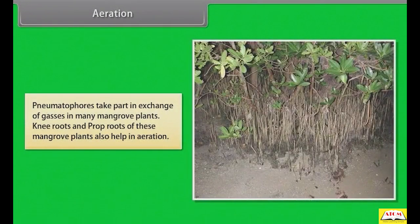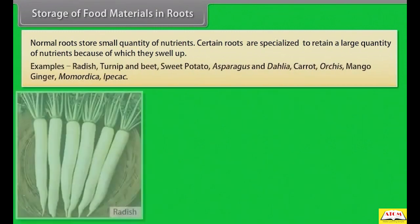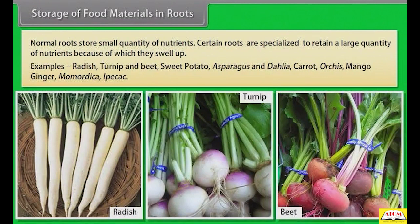Pneumatophores take part in exchange of gases in many mangrove plants. Knee roots and prop roots of these mangrove plants also help in aeration. Certain roots specialized for storage swell up. Examples: radish, turnip, beet, sweet potato, asparagus, dahlia, carrot, colocasia, mango ginger, Momordica, ipecac.